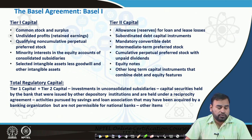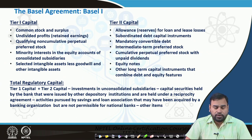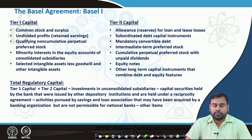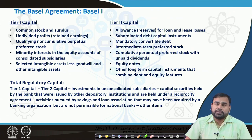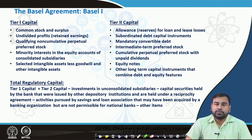To calculate total regulatory capital: tier 1 capital plus tier 2 capital, minus investments in unconsolidated subsidiaries, minus capital securities held by the bank issued by other depository institutions under reciprocity agreements, minus activities pursued by savings and loan associations acquired by the banking organization but not permissible for national banks, and minus other items. Mostly, tier 1 consists of equity — owner's equity — and tier 2 consists of debt.